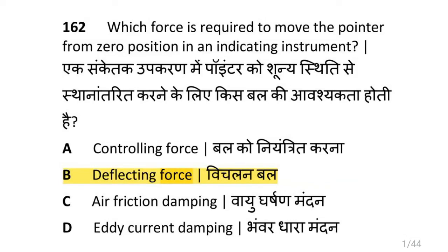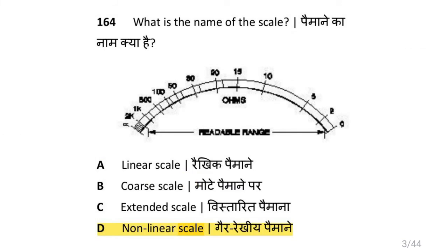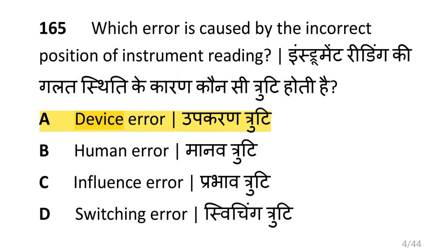Which force is required to move the pointer from zero position in an indicating instrument? That is deflecting force. Which is the position to use the instrument provided with gravity control? That is vertical position. What is the name of the scale used? That is non-linear scale. Which error is caused by the incorrect position of instrument reading? That is device error.